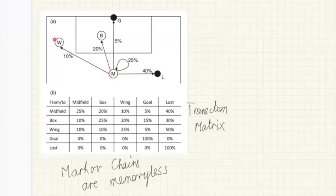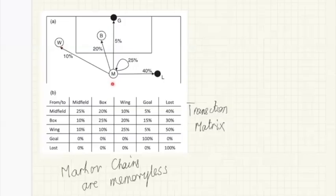We start in midfield, go out to the wing, maybe into the box. Each time we make those transitions, they're determined by these probabilities: the probability of going from the wing to the box is 10%, and the probability a pass goes from the wing and stays on the wing is 25%. The probability of scoring a goal from midfield is 5%, while it increases to 15% when we're in the box. We simulate the game by following these transition matrices and rolling a random number to decide where we've gone. Eventually the ball either ends up in the goal or it's lost to the opposition.